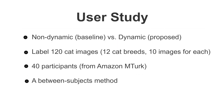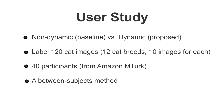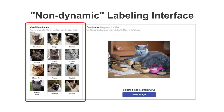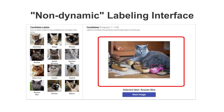We ran a user study to compare a conventional non-dynamic and the proposed dynamic labeling approach for an image labeling task. Here shows the labeling interface of the conventional non-dynamic approach. The left side of the interface lists labels, and the right side presents a target image that needs to be labeled.